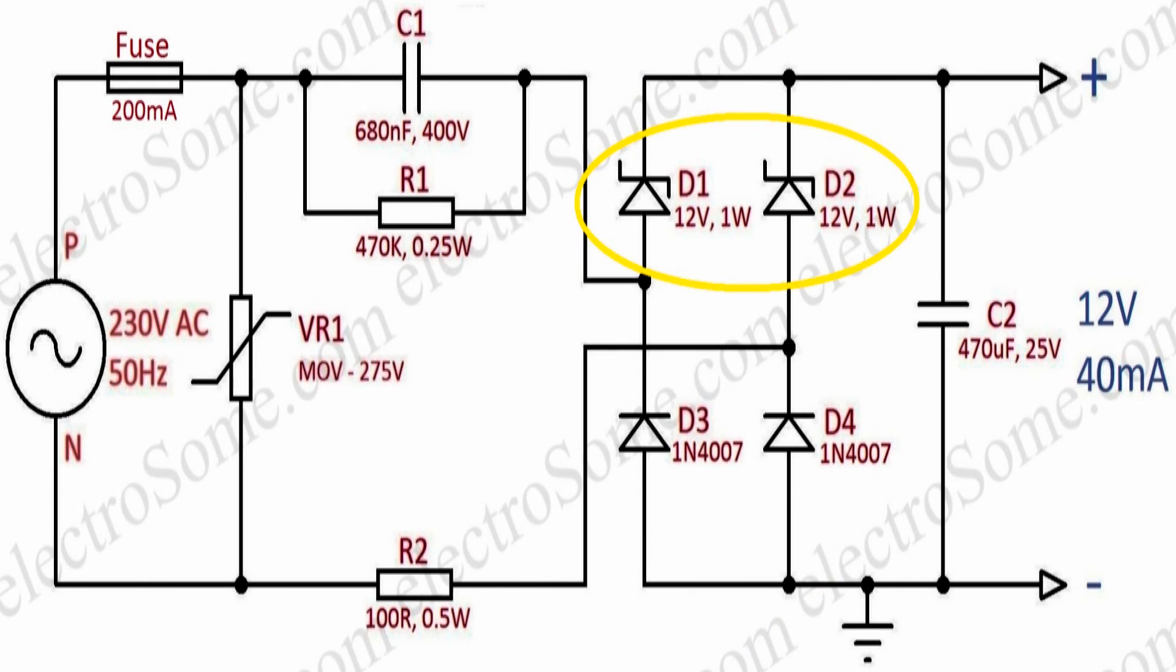Among these, diodes D1 and D2 are Zener diodes, which will clip the rectified voltage at its Zener breakdown voltage. Capacitor C2 is the filtering capacitor which will filter the rectified DC voltage.